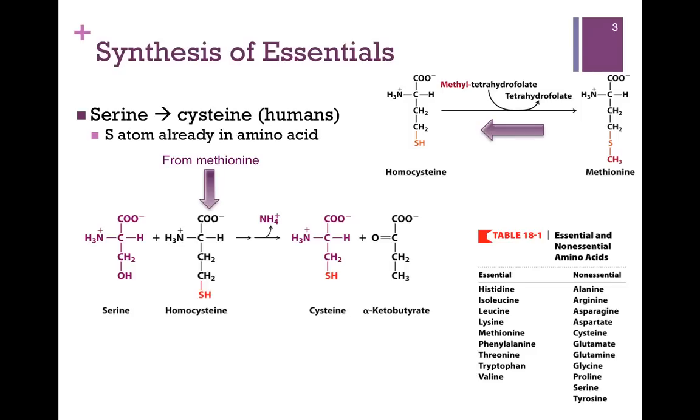So cysteine is a non-essential amino acid, but we have to have the essential amino acid methionine in order to make it.